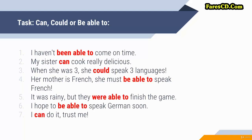'I haven't been able to come on time.' — Perfect tense, you can't use CAN or COULD, so BE ABLE TO. 'My sister can cook really delicious.' — CAN COOK, general ability in the present, informal. If you want to make it more formal: 'My sister is able to cook.' 'When she was three, she could speak three languages.' — General ability in the past; you can also say 'she was able to speak three languages.' 'Her mother is French — she must be able to speak French.' — Modal verb plus BE ABLE TO; you can't use another modal verb here.